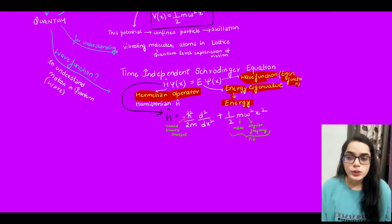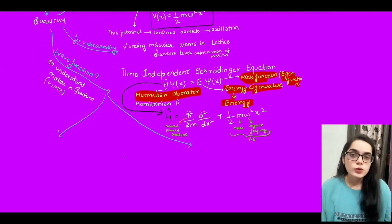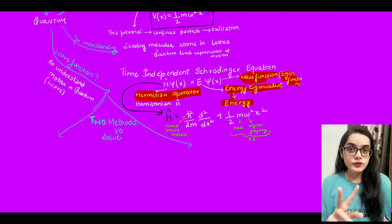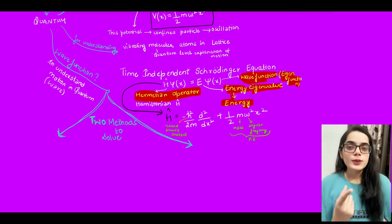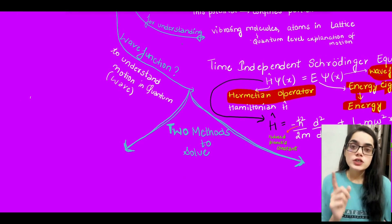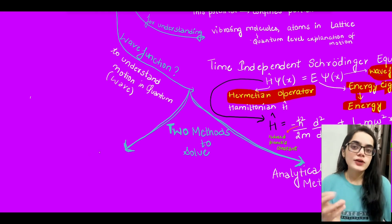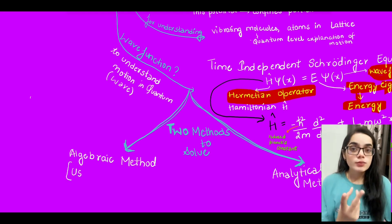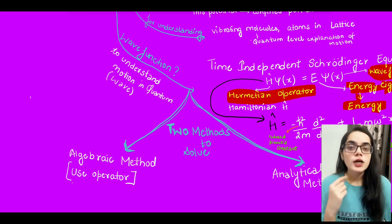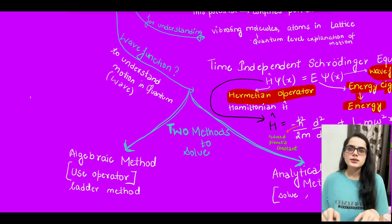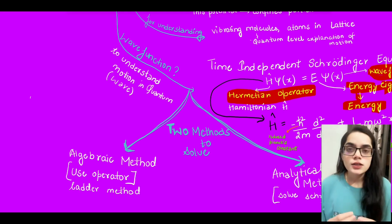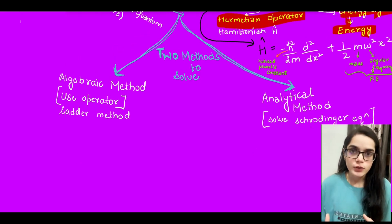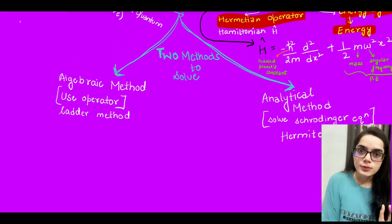To solve this Schrödinger equation, there are two methods. The first is the analytical method, where we solve the Schrödinger equation, find the eigenvalues and eigenfunctions, and use Hermite polynomials. The second is the algebraic method using ladder operators — also known as the algebraic method — which uses matrices and operator algebra. We will go with the analytical method first.